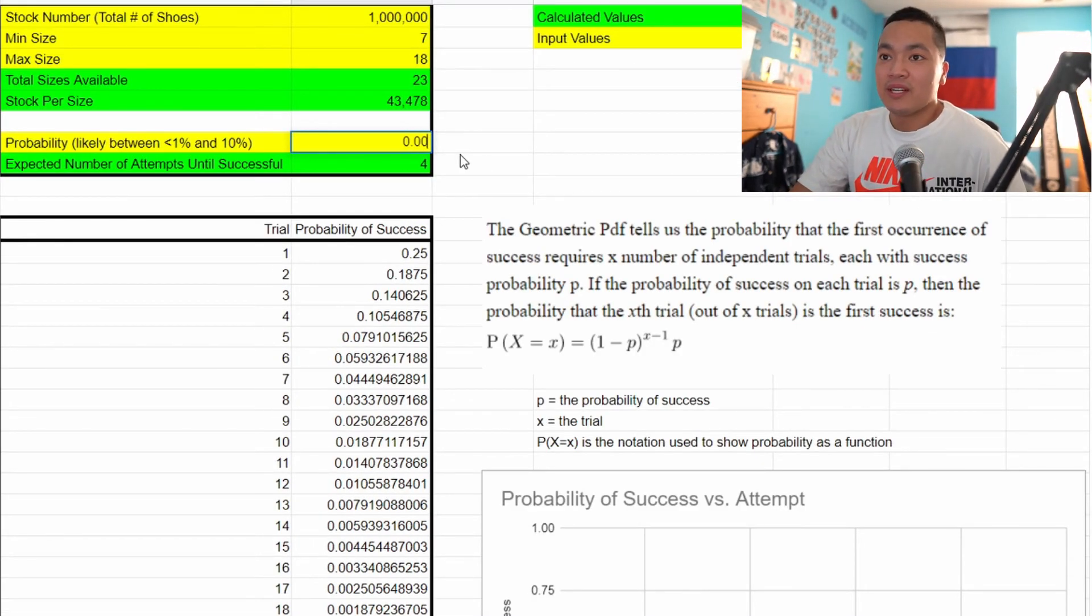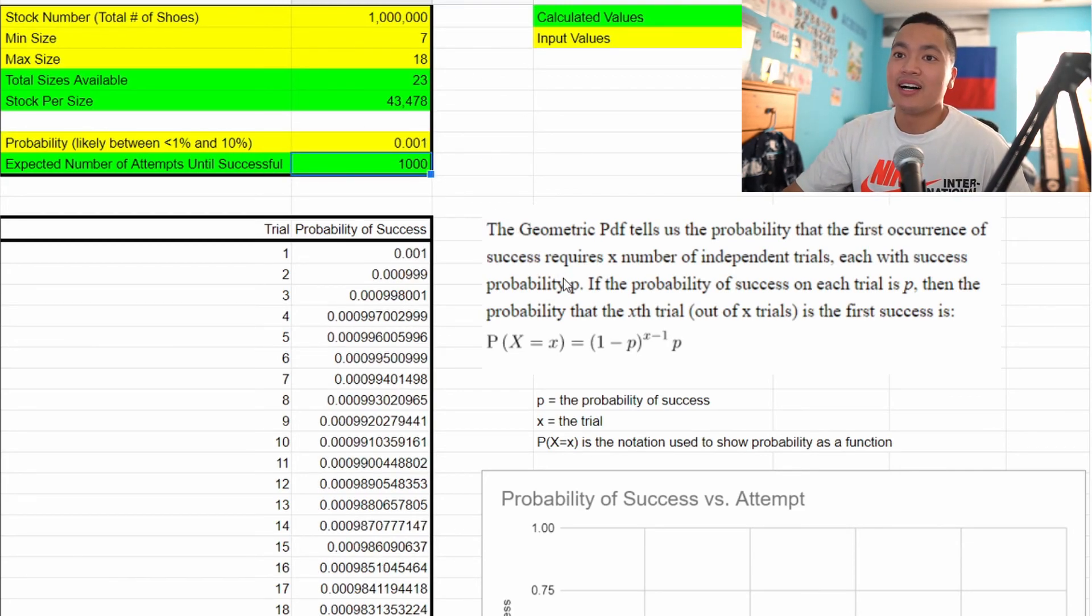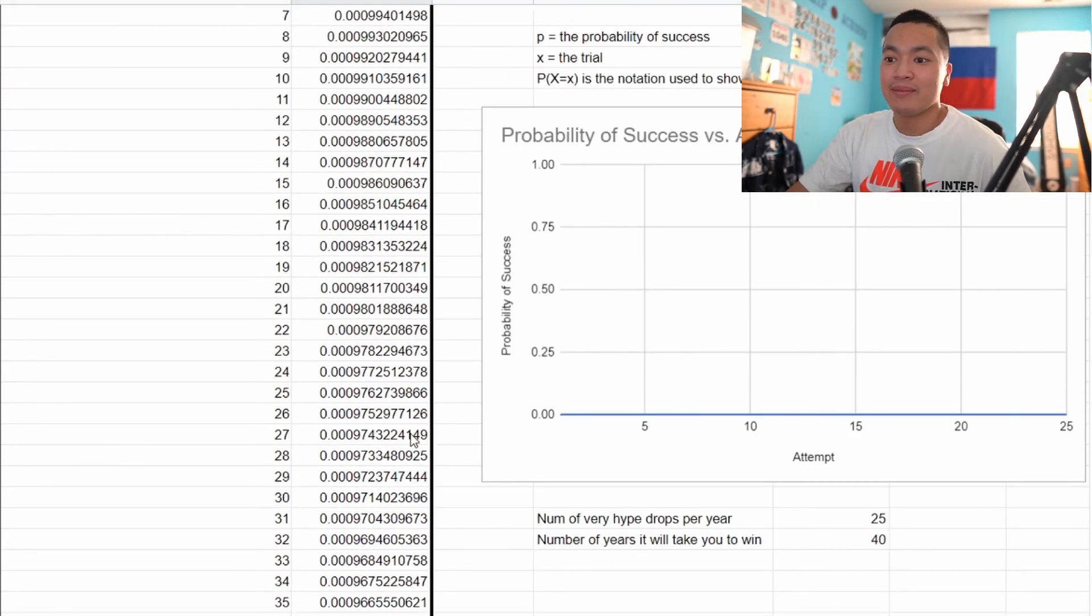Let's look at something less than 1% which I think is very very possible. So let's say something takes 0.001% that's a tenth of 1%. It would take you a thousand tries to take a W on the sneakers app and again you get a super flat line because your odds are going to be pretty much the same every single time. If there are 25 hype drops a year then it would take you 40 years to win.